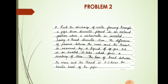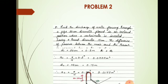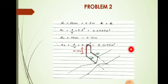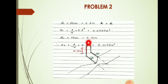In Bernoulli's equation, the second term is velocity head, which is V squared by 2g. Now, the given data: d1 is 30 centimeter which is equal to 0.3 meter, d2 is 0.15 meter, and a2 is 0.0177 meter square.